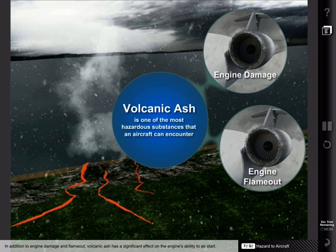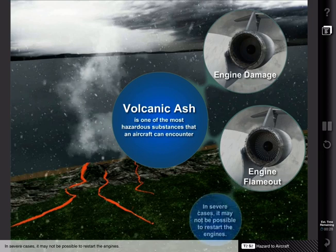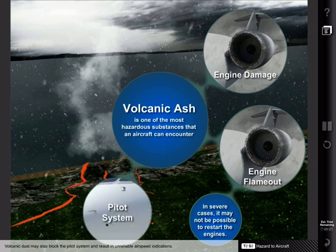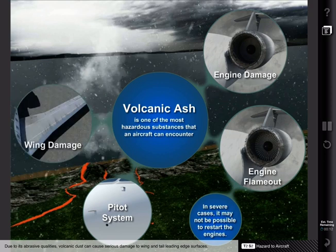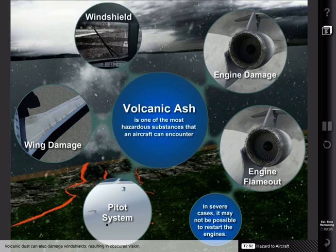In addition to engine damage and flame-out, volcanic ash has a significant effect on the engine's ability to air start. In severe cases, it may not be possible to restart the engines. Volcanic dust may also block the pitot system and result in unreliable airspeed indications. Due to its abrasive qualities, volcanic dust can cause serious damage to wing and tail leading edge surfaces, and can also damage windshields, resulting in obscured vision.